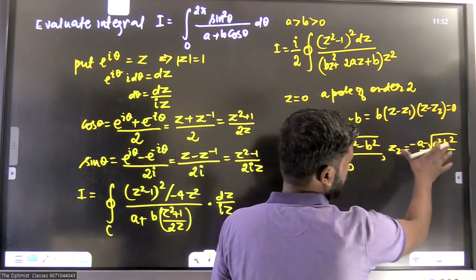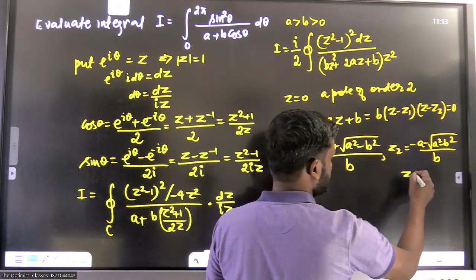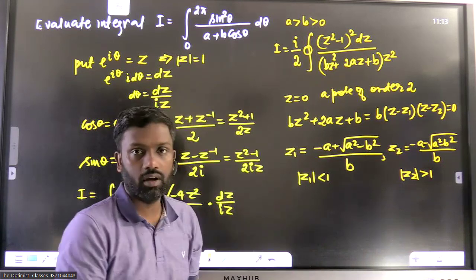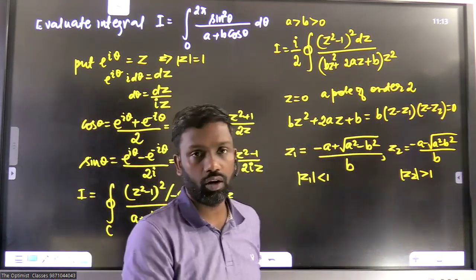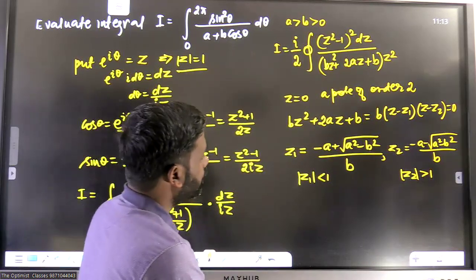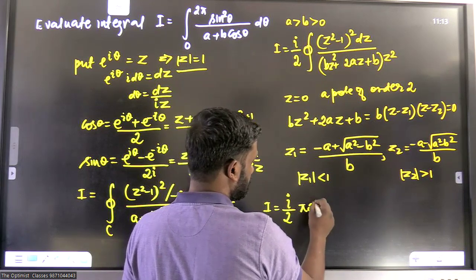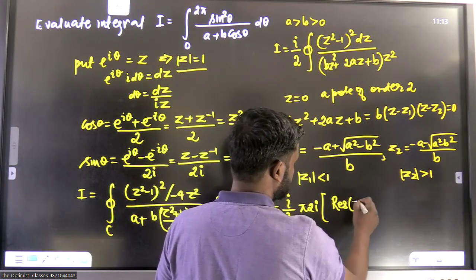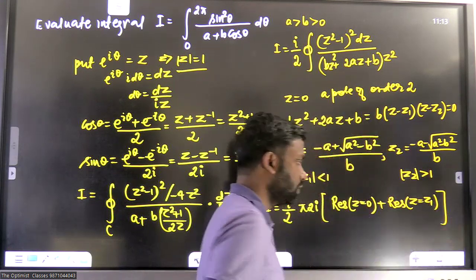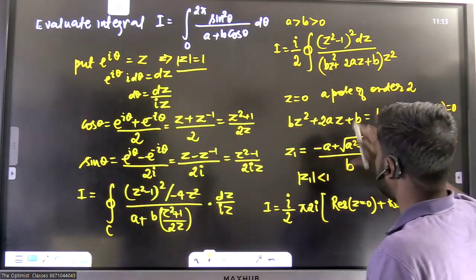If you calculate the magnitude of z₁, it is less than one, and the magnitude of z₂ is greater than one. So z₁ is within the unit circle and z₂ is outside. Since we are integrating on the unit circle (mod z = 1), the integral I equals (i/2) times 2πi times [Residue at z=0 + Residue at z=z₁].